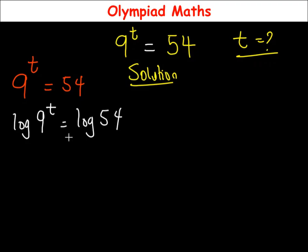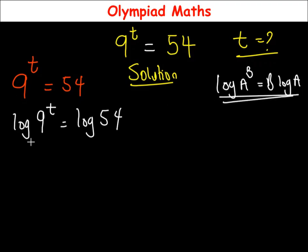With this, we're going to introduce one identity: if you have log of a raised to power b, then power b becomes b times log of a. So applying this rule right here, power t becomes t times log of 9, which is equal to log of...